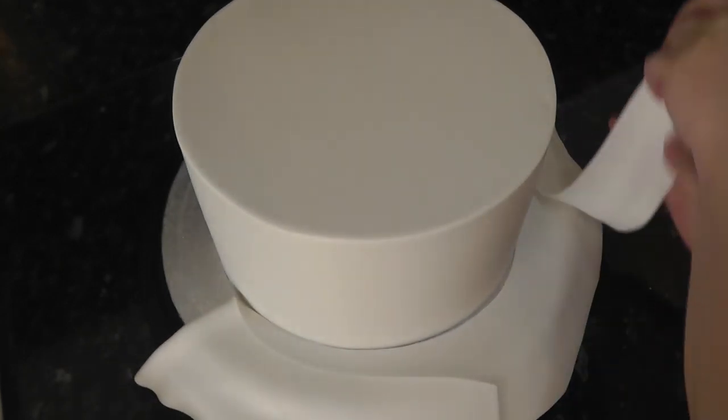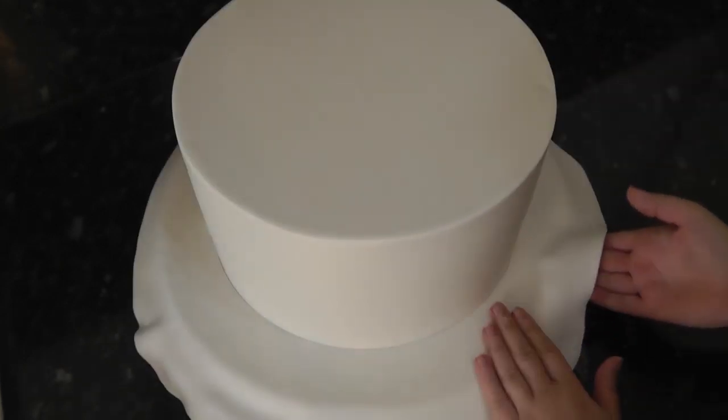The cake is secured to the drum with ganache and we are now covering the board in more white using the toilet seat method, which is also linked below.